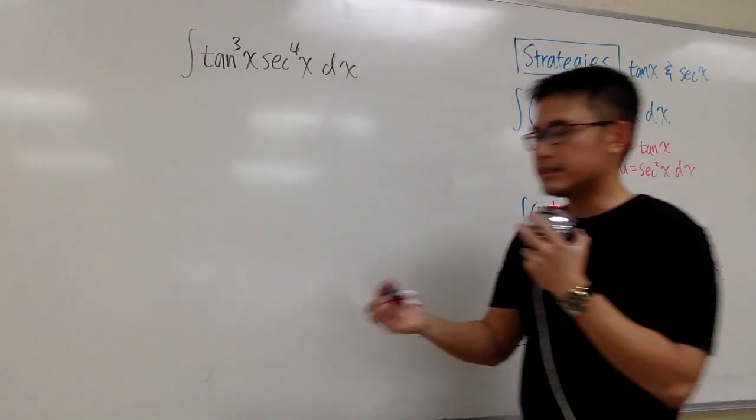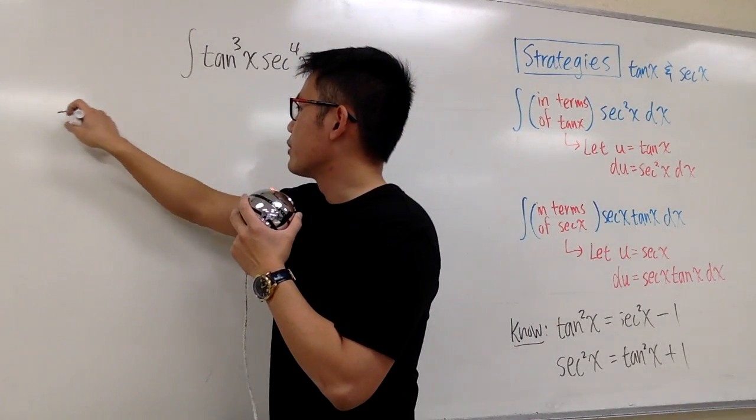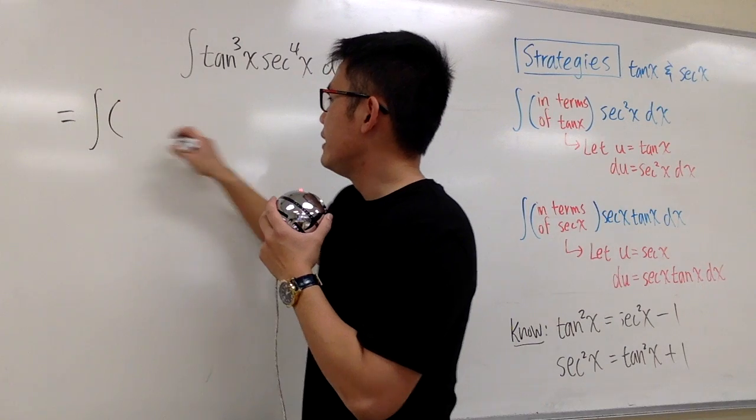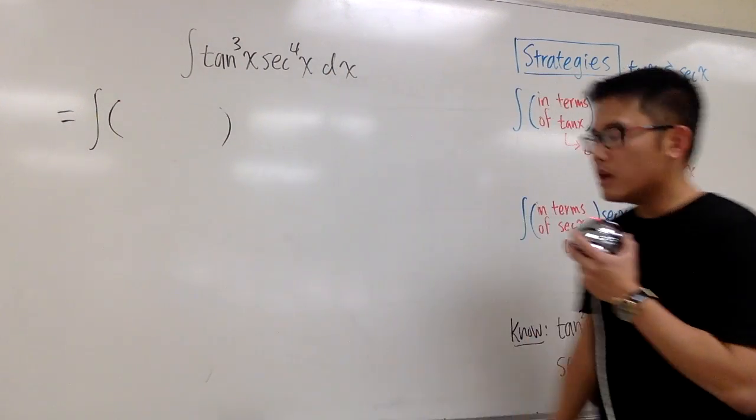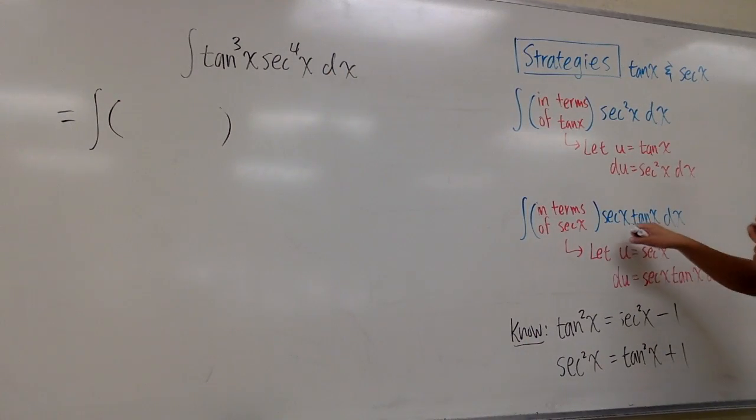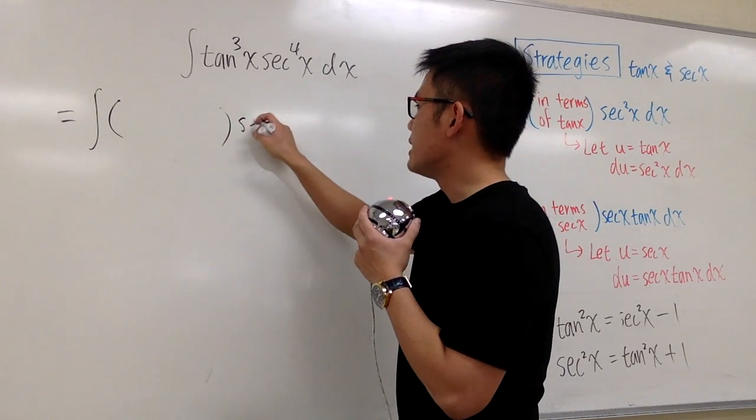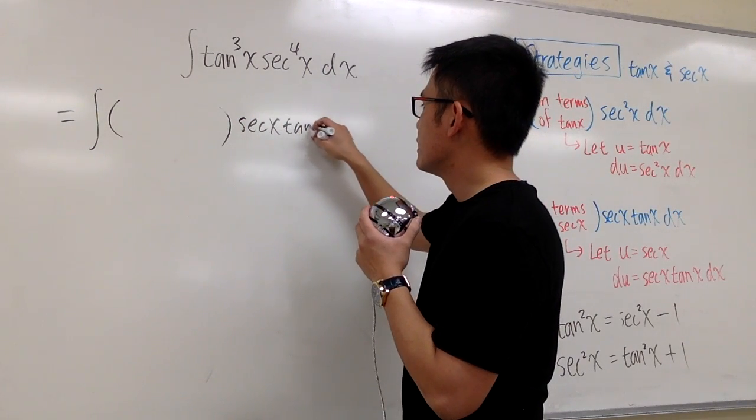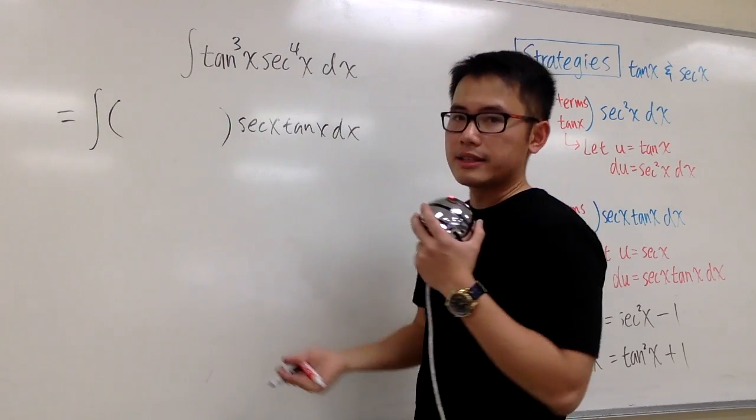Let me show you the thought process. I'm going to write it down right here. We have the integral, and then we want to have the first part. And for the second strategy, I would like to take out a secant x tangent x, and then we have the dx on the side. Secant x, tangent x, dx on the side.